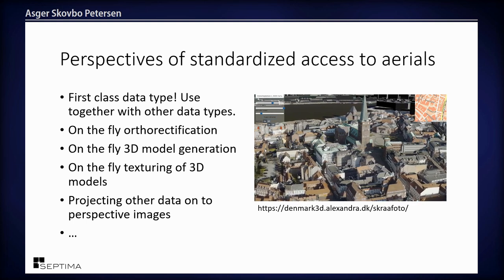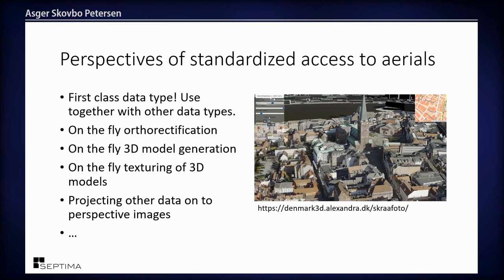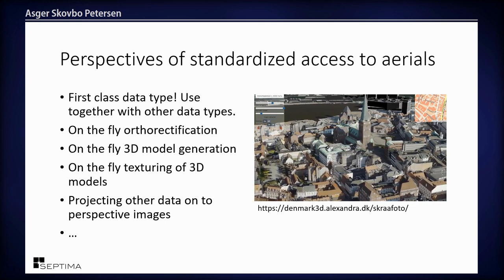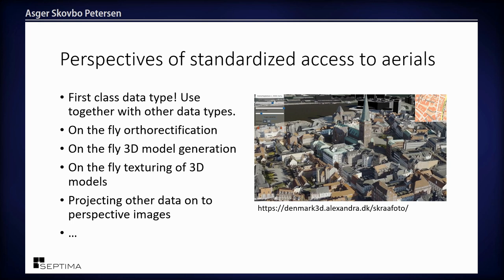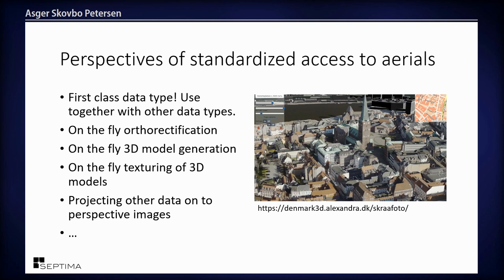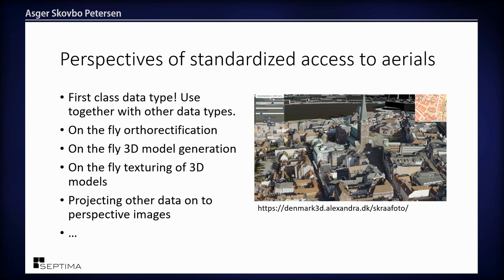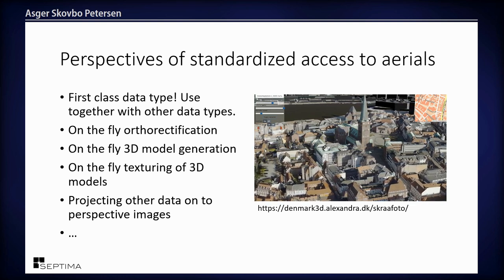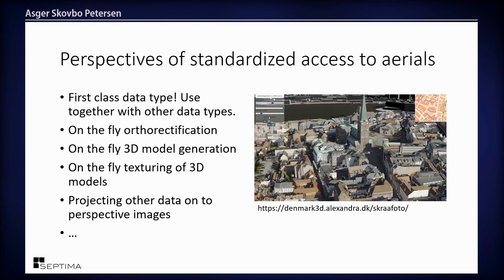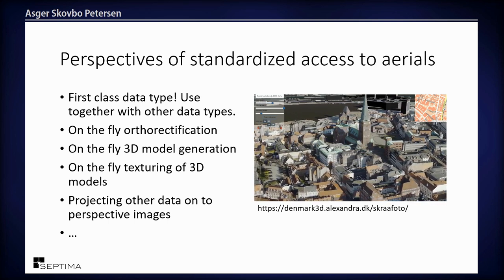For some perspectives on standardized access to aerials: I'd really like perspective images to be first-class data citizens. Up until now, we tend to use aerial imagery only for deriving other products — topographic data, vector data, orthophotos — and then it goes on the shelf, even though it contains information we can't get any other way. I'd like to see a common way to standardize access to this data type so we can combine it with other data.